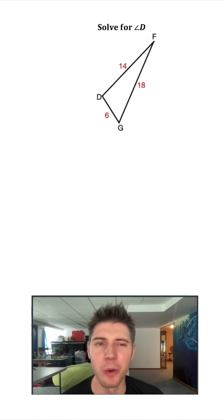I got a request for law of cosines from user 1234, which is kind of creepy because that's my password. So here's a triangle that gave us the three sides of the triangle and they want us to find angle D.